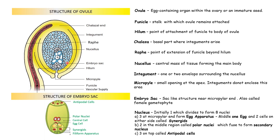So the eight nuclei — how are they distributed? Inside the embryo sac, these eight nuclei do not stay together; they get distributed. Three nuclei go to the micropylar region and they form the egg apparatus. Of these three nuclei, the middle one is the egg cell or the female gamete. The egg cell has two cells on either side, and these are known as the synergids. So three are accounted for.